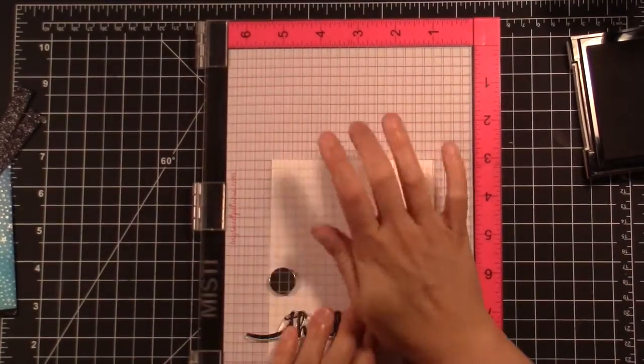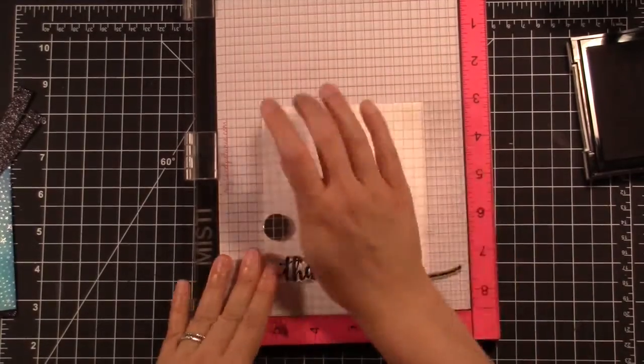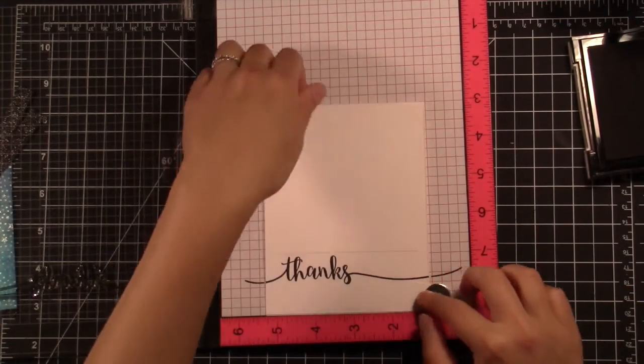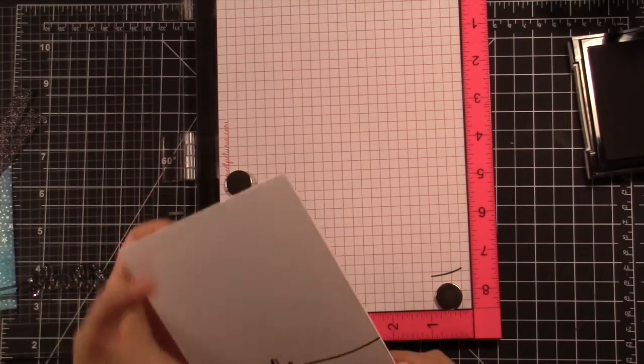Now I normally like to place my card base towards the right bottom hand corner so that I know exactly where it needs to be every single time, but I felt like that loop towards the right at the end of the S was kind of going over the pink ruler mark, and I felt like maybe it might not stamp the rest of the word quite perfectly.